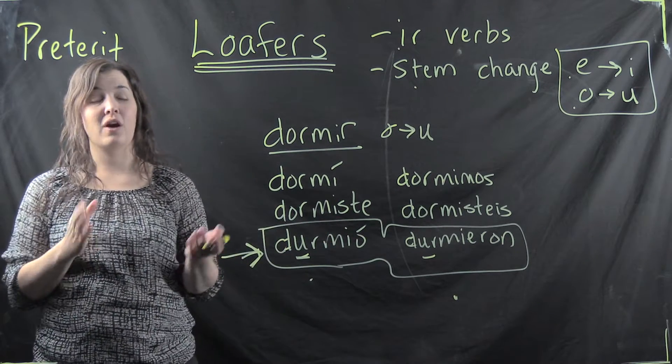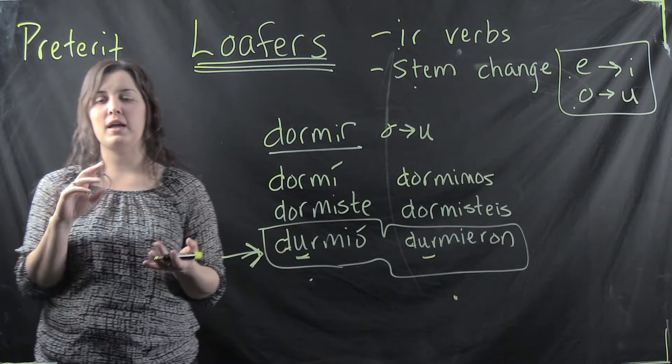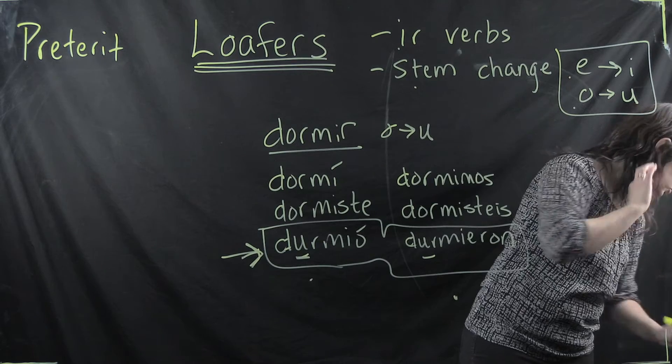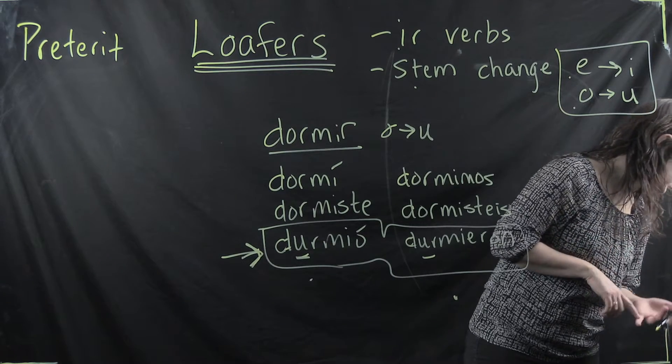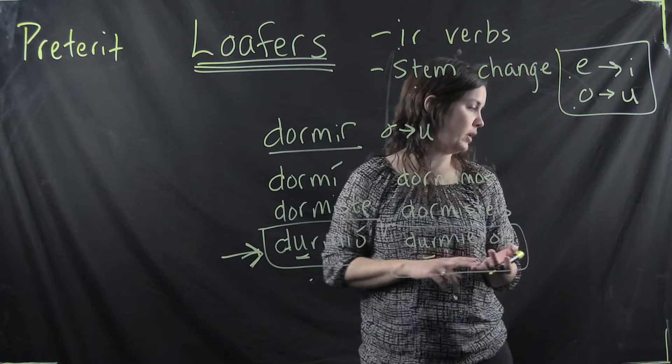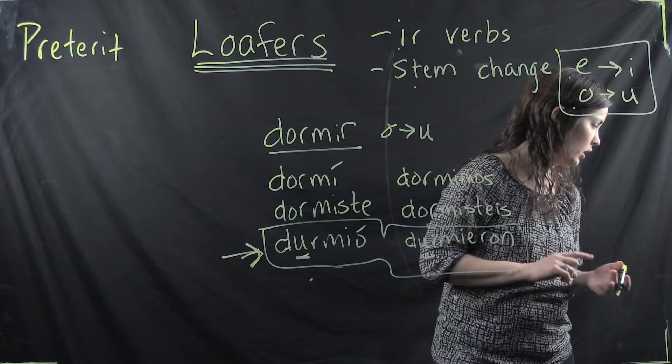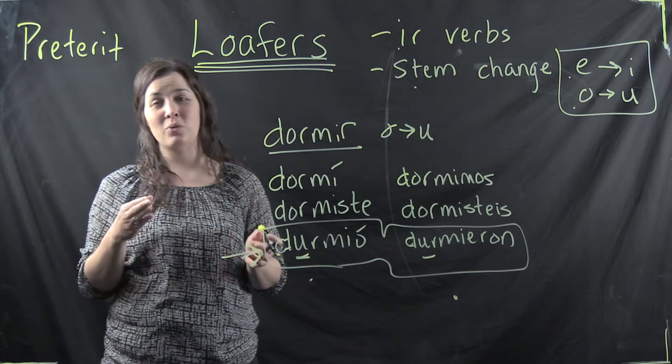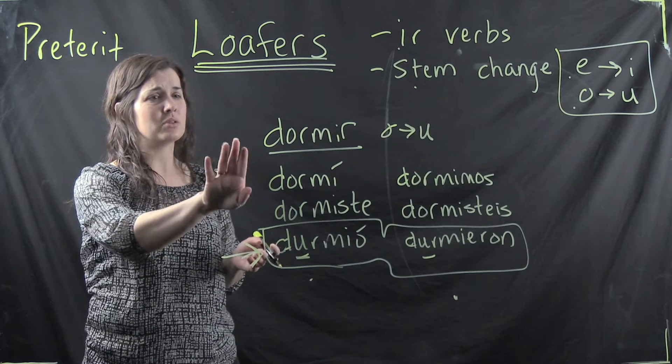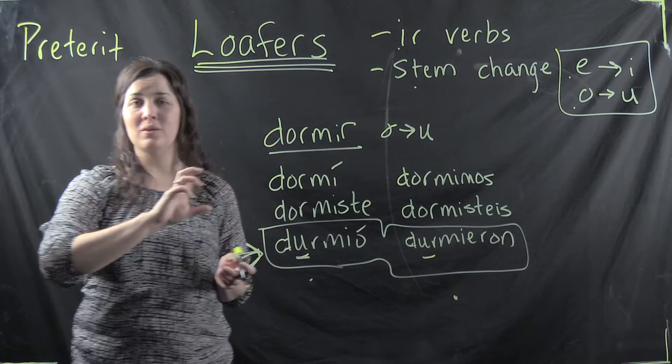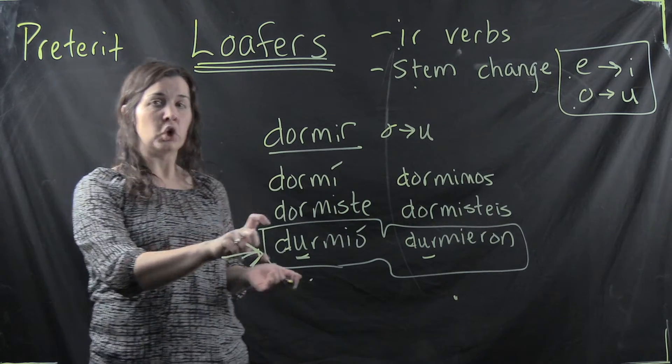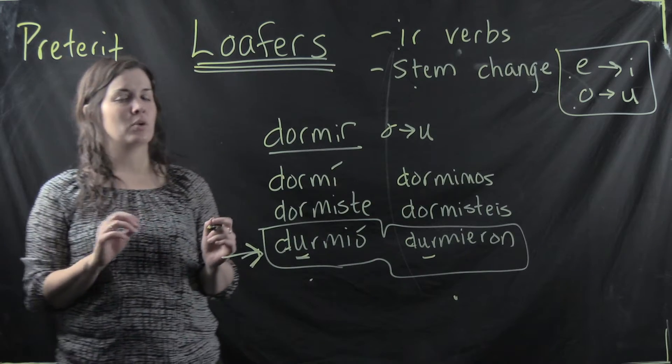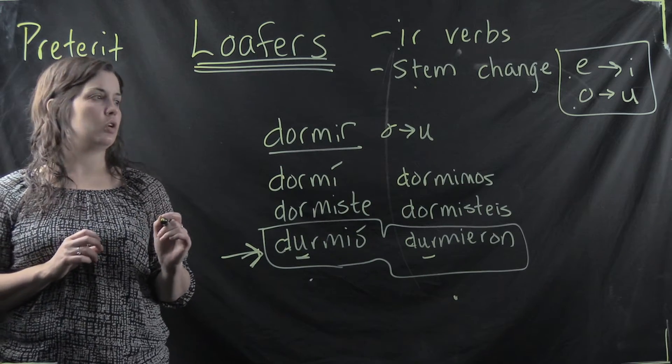A lot of verbs are E to I. There are actually a lot more that do E to I than the O to U and on page 206 of your text or e-text you have a list of them. Preferir, repetir, seguir, sentir, servir, those are all E to I loafers. The only O to U ones that you'll probably run into, dormir is the most common. Morir which means to die is also one that will have a murió and murieron in third person.